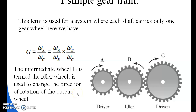Now we will discuss about gear train. A gear train means a number of gears connected to each other to transmit motion from one gear to another. We have different types of gear trains: simple gear train, compound gear train, and epicyclic gear train.